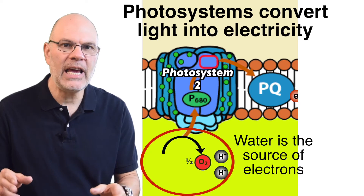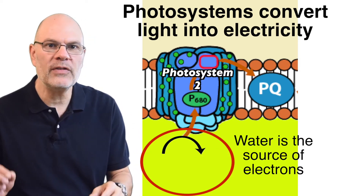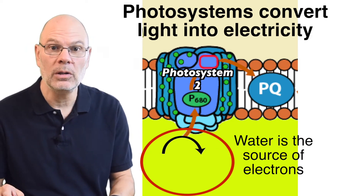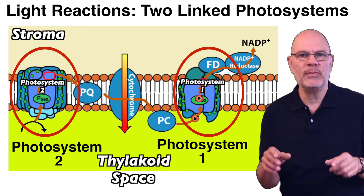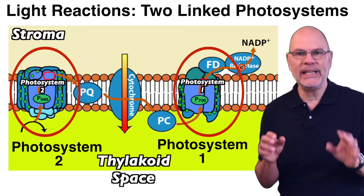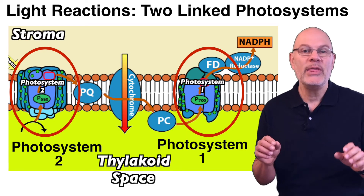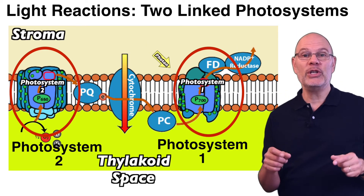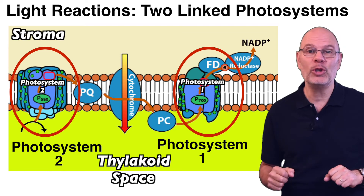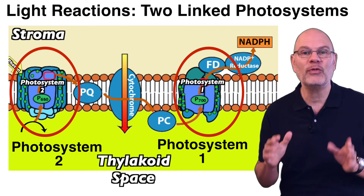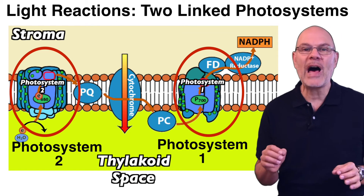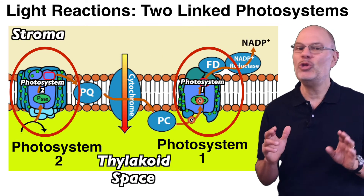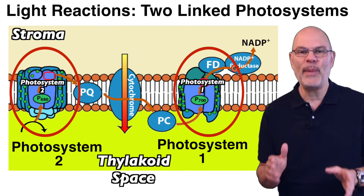The source of the electrons is water. There are two photosystems sequentially linked together. They were numbered in order of their discovery, so photosystem 2 unfortunately comes first, followed by photosystem 1. You just have to remember that.